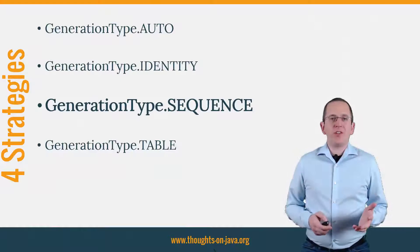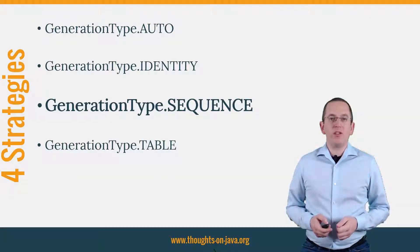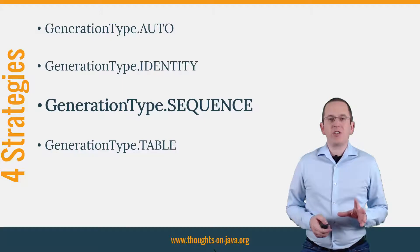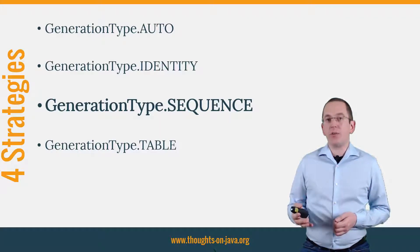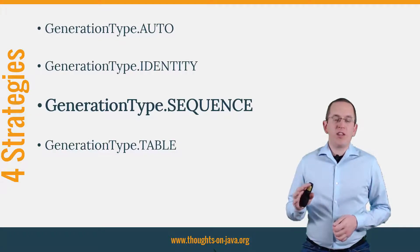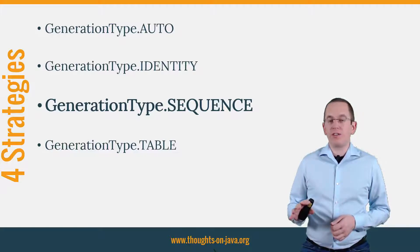As you have seen, JPA offers 4 different ways to generate primary key values: AUTO, IDENTITY, SEQUENCE, and TABLE. I prefer to use GenerationType SEQUENCE because it is very efficient and allows Hibernate to decide when to perform the insert statement. This provides the required flexibility to use other performance optimization techniques like JDBC batching.